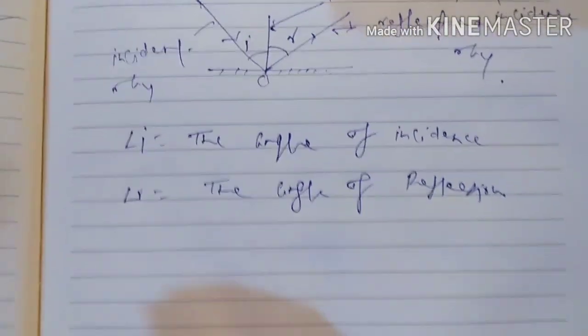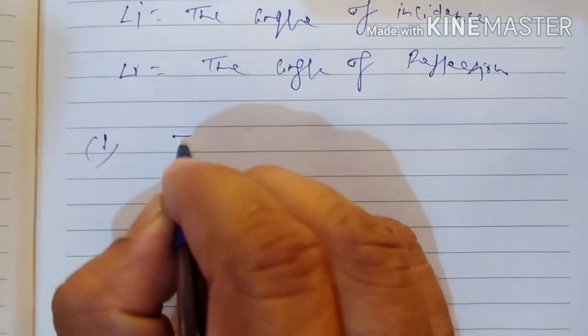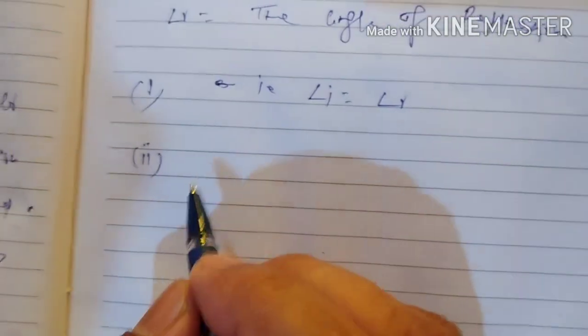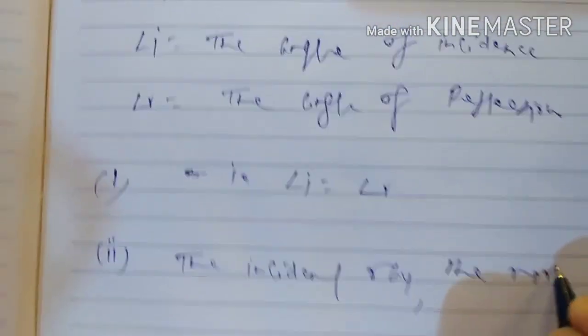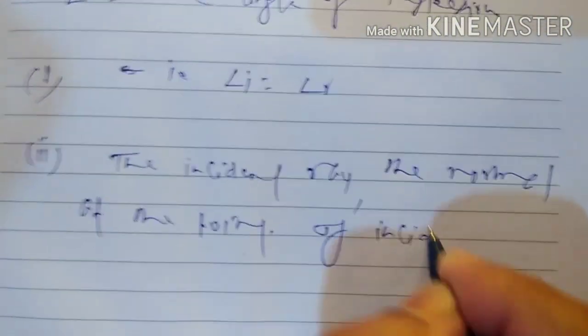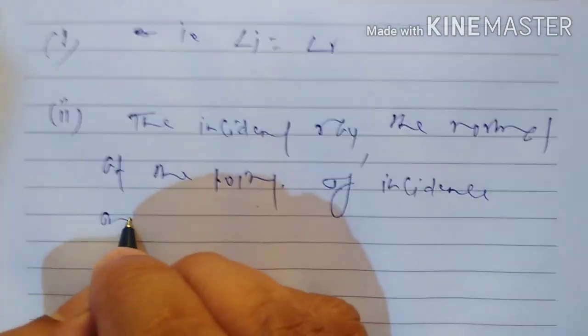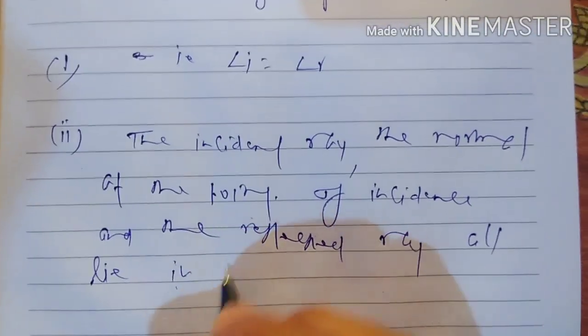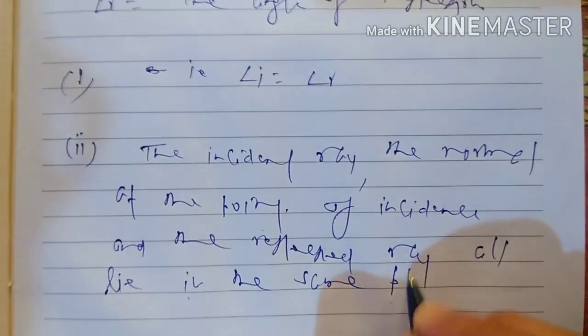With this knowledge, we can now state the laws of reflection. The first law of reflection states that the angle of incidence is equal to the angle of reflection. The second law states that the incident ray, the normal at the point of incidence, and the reflected ray all lie in the same plane.